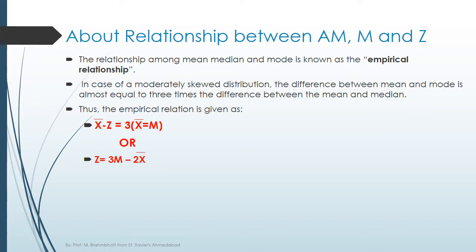Thus, the empirical relationship between mean, median, and mode is given by x bar minus z equals 3 times x bar minus m. Or, it can be written as z equals 3m minus 2x bar.